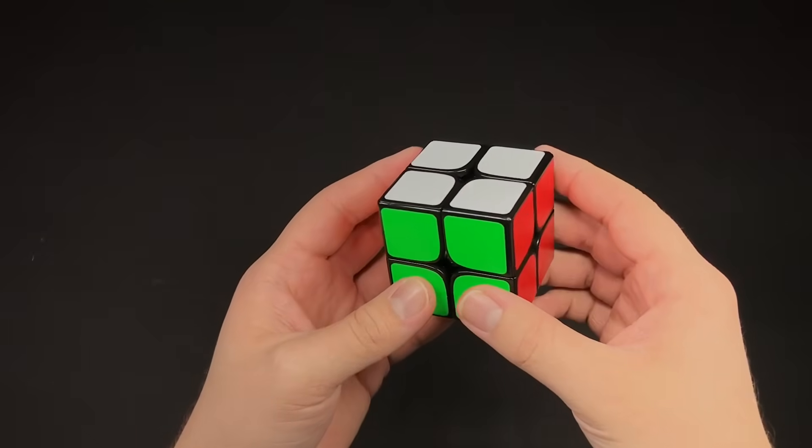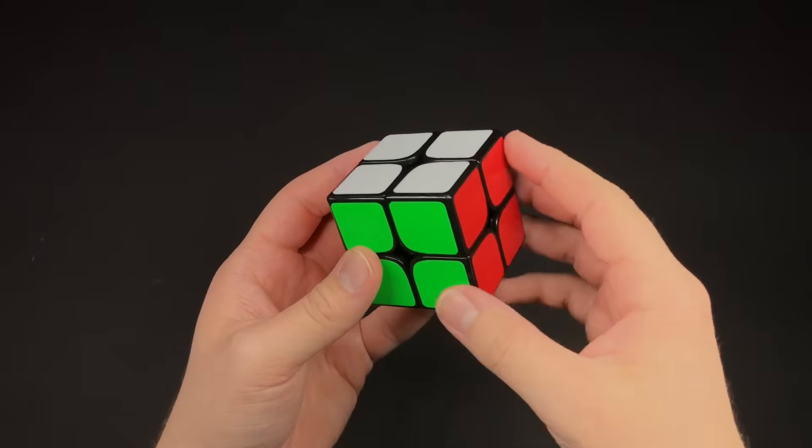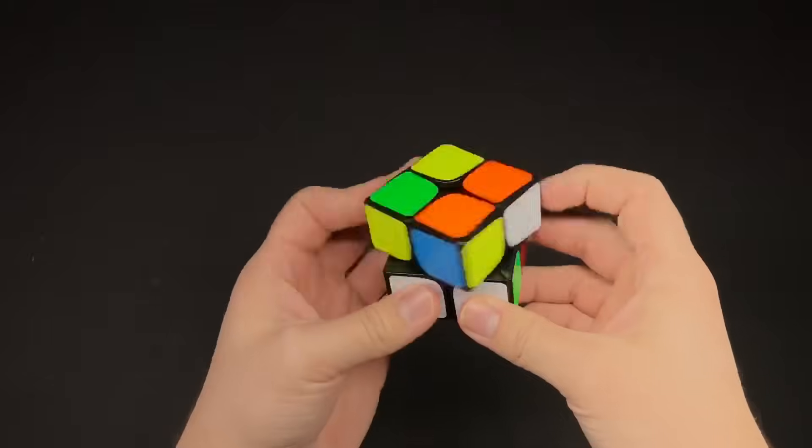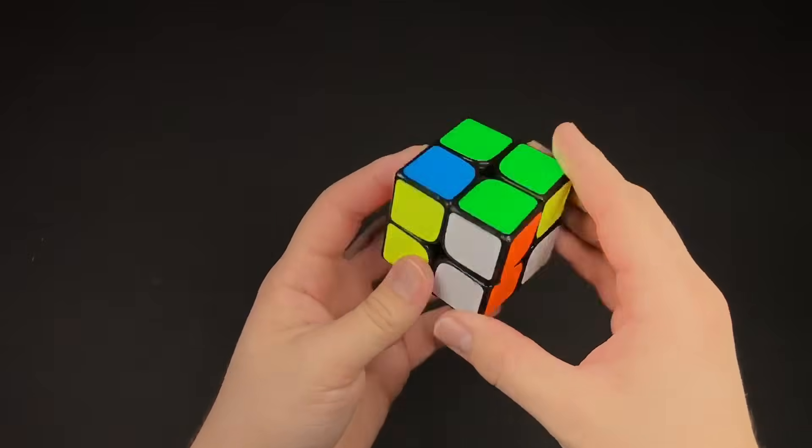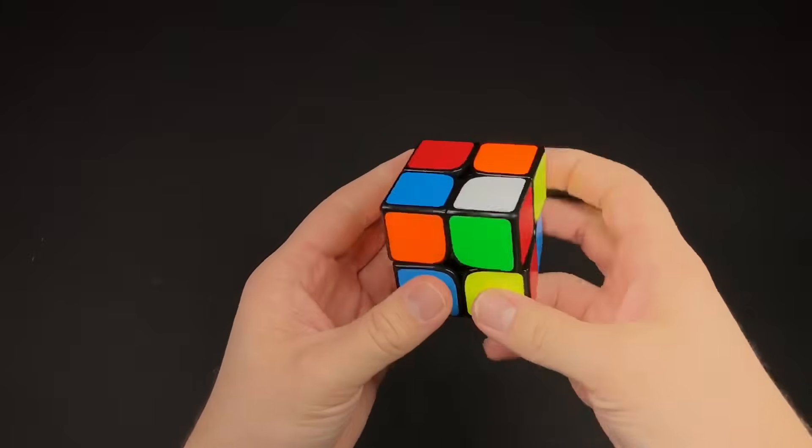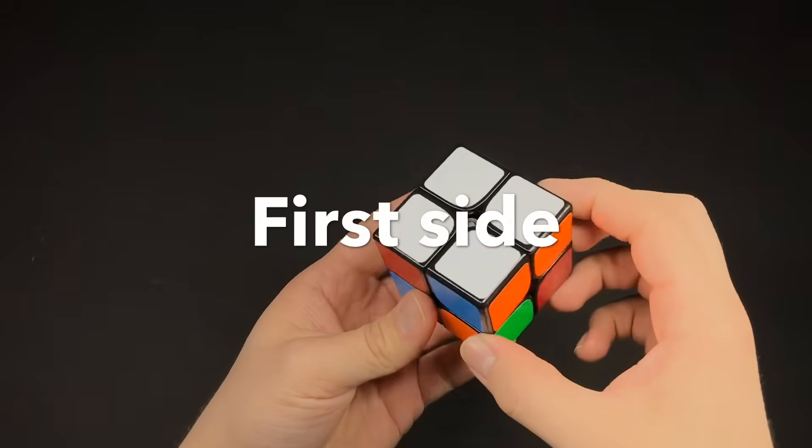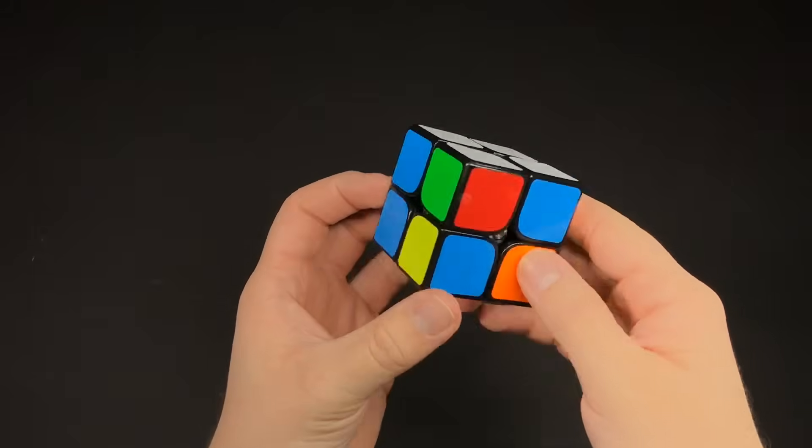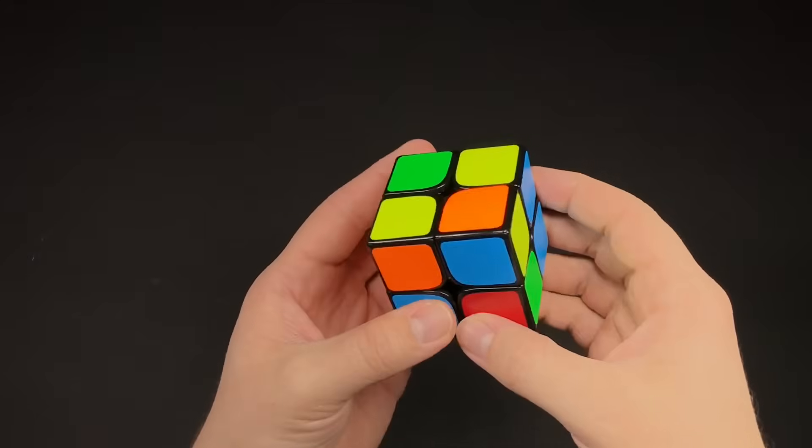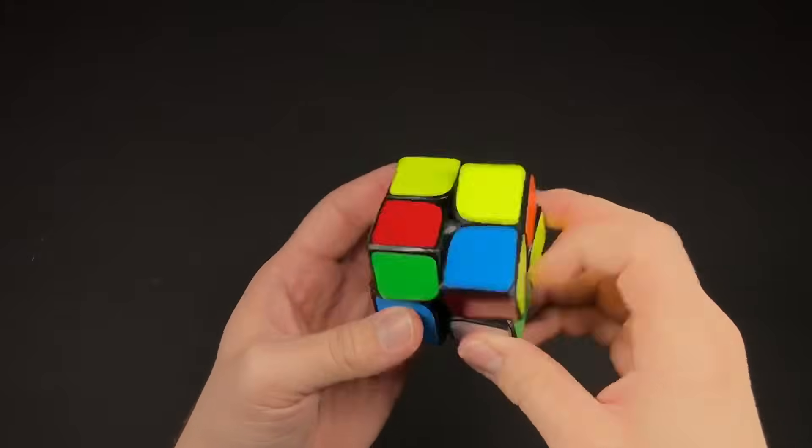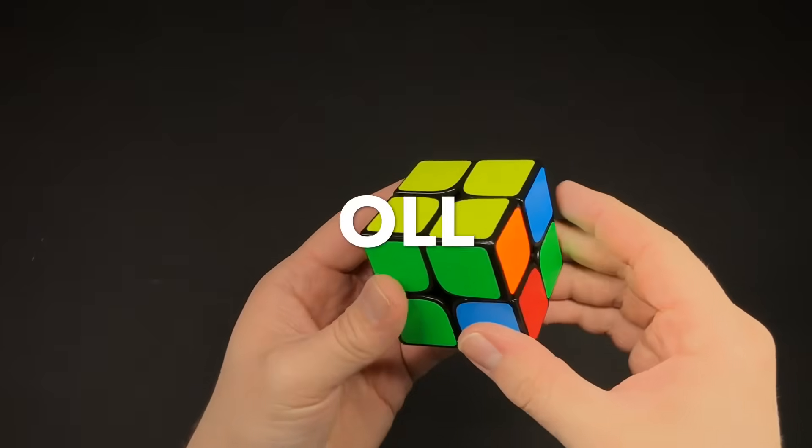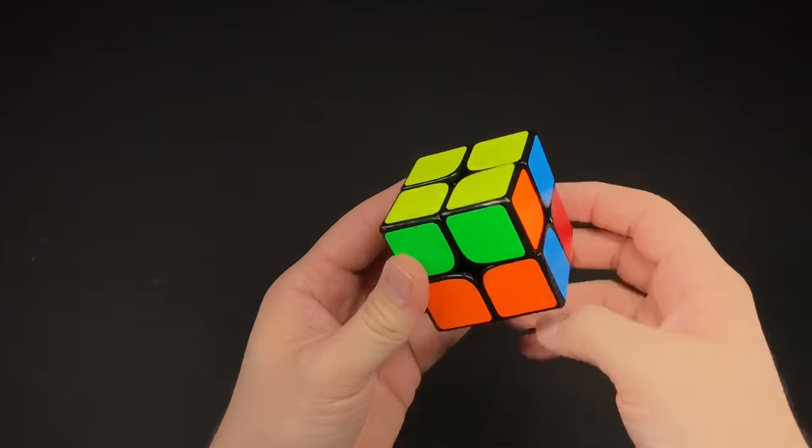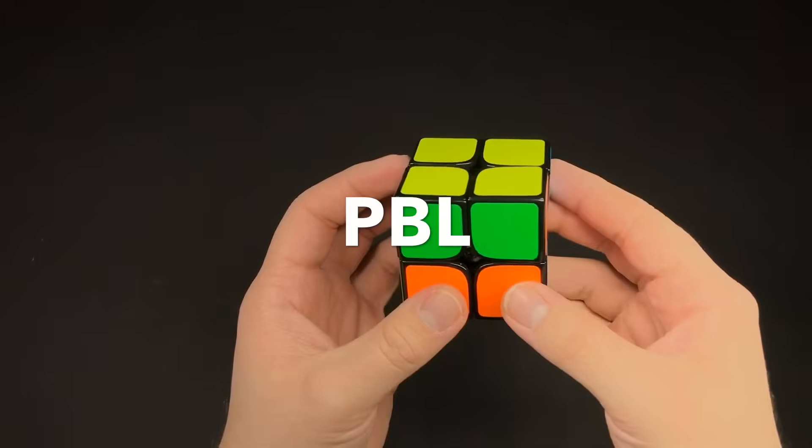The Ortega method is broken down into three different steps. The first step would be to get the first side and the side colors do not matter. Second step would be to solve the opposite side, the yellow side. And then the third step is to solve the rest of the cube.